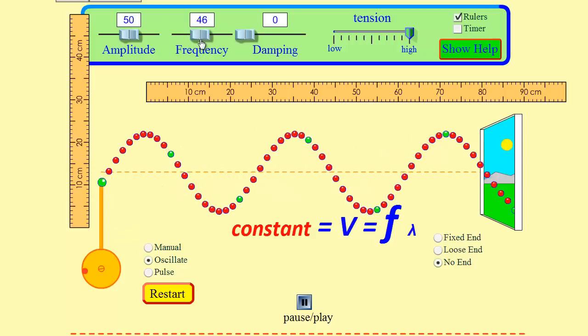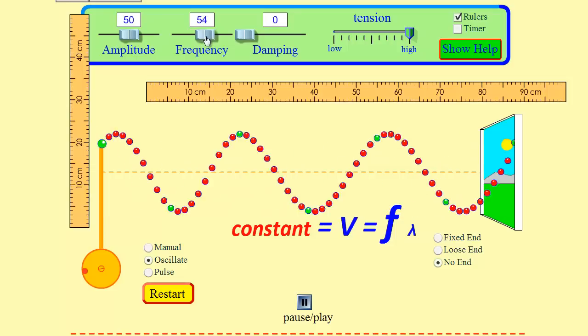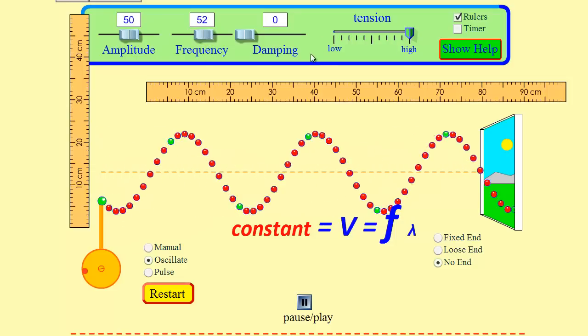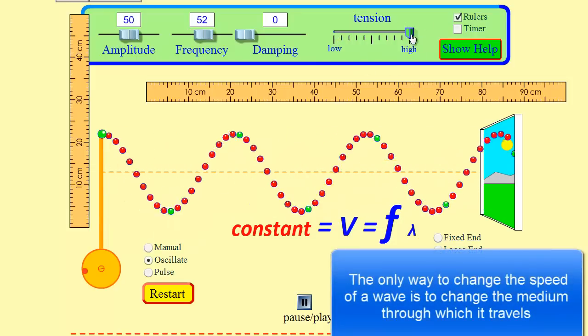So the velocity of the wave is independent of f and lambda. In fact, the only way you can change the velocity of a mechanical wave is to change the medium itself. And to do that on this simulation, we'd have to change the tension.